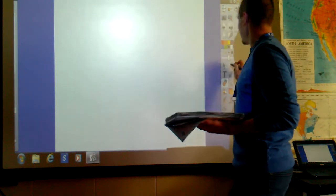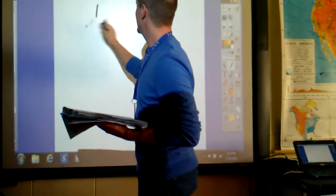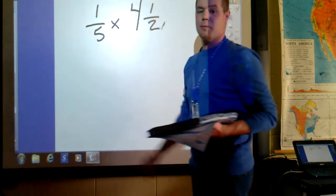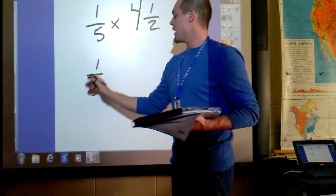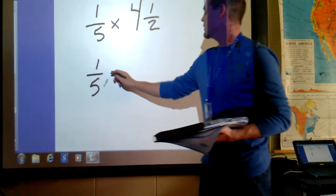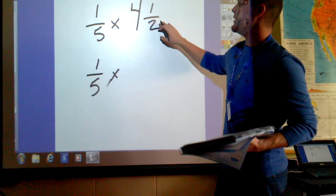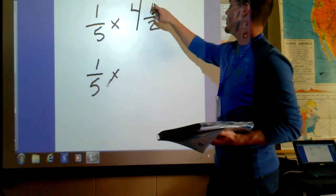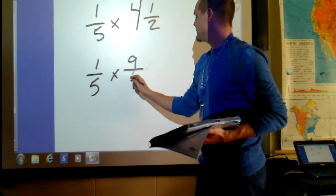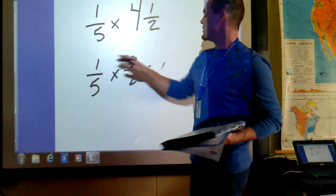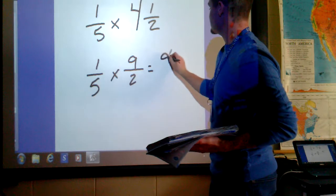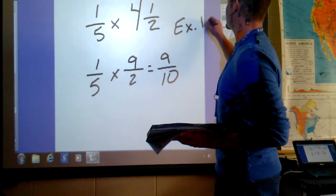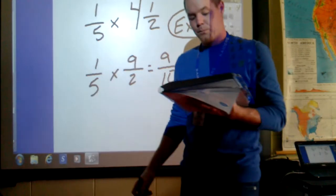Let's look at example 1. It says multiply 1 fifth and 4 and 1 half. The fraction 1 fifth does not change. 4 and 1 half needs to become an improper fraction. I take 4 times 2 and get 8. Plus 1 is 9 halves. 1 times 9 is 9. 5 times 2 is 10. And your answer for example 1 is 9 tenths.